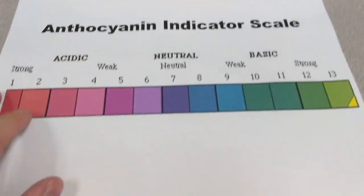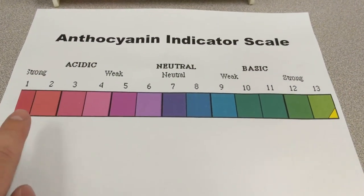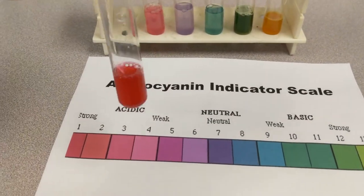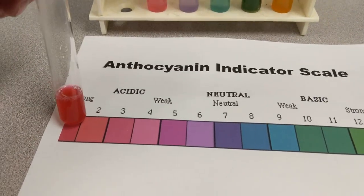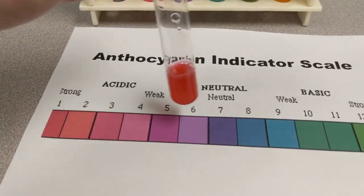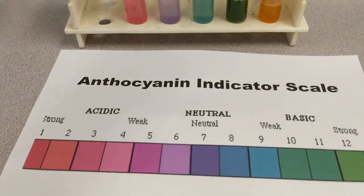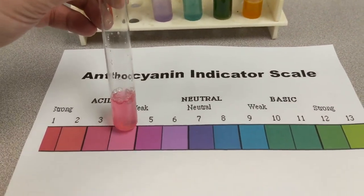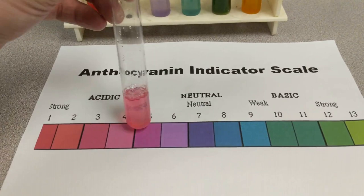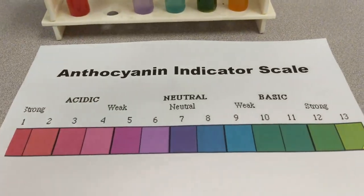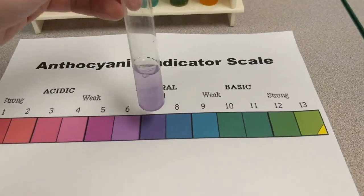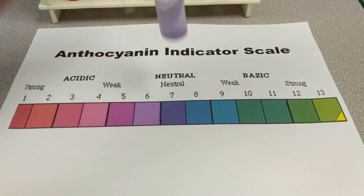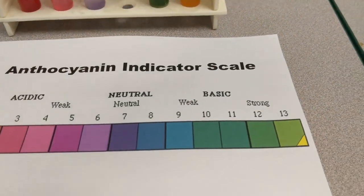We can look at this anthocyanin indicator scale to see what the colors suggest about their pH. This red one is the hydrochloric acid — a very strong acid, so it's closer to the 0 end of the scale. Next, the distilled white vinegar is going to be pinker, closer to the 3 or 4 range. Then we have pretty much exactly purple — a little diluted, but you can see that color. This is the water, at neutral pH 7.